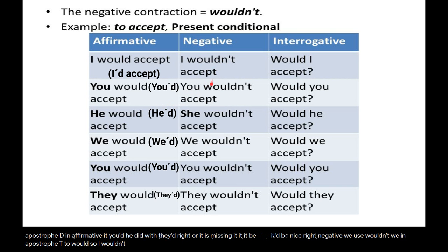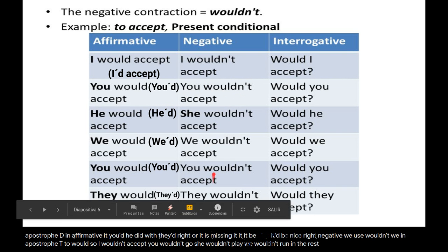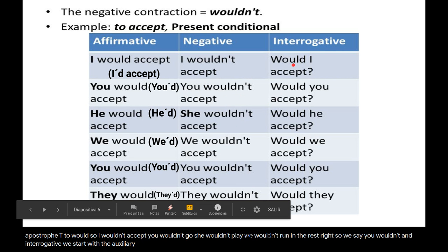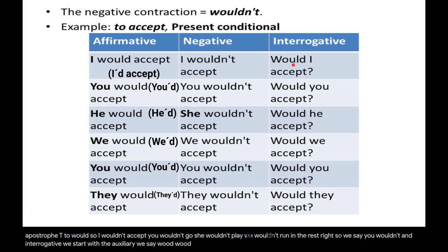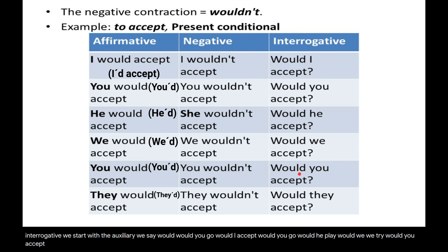For the negative, we use 'wouldn't' — we add N-apostrophe-T to 'would.' So: 'I wouldn't accept,' 'you wouldn't go,' 'she wouldn't play,' 'we wouldn't run.' For the interrogative, we start with the auxiliary: 'Would you go?' 'Would I accept?' 'Would he play?' 'Would we try?' 'Would they run?' We always use 'would' followed by the base form of the verb.